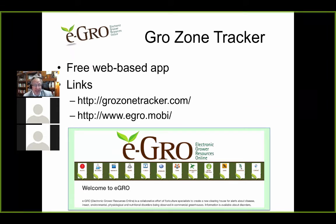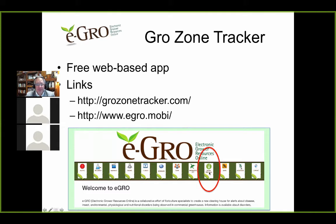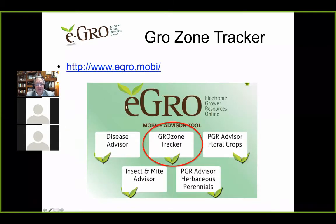It's a free web-based app. You can either type in growzonetracker.com or you can get it from the eGrow website. If you go to the eGrow.org website, it's under the mobile app option. Click on that, and here are the options that come up — you just click on it and you're in.